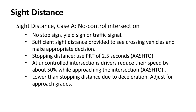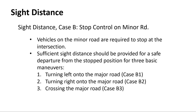Case A — no control — means there are no signs telling people who has the right of way. By federal law, if two cars approach at exactly the same time, the car to your right has the right of way. There are charts and tables to calculate approach and departure triangles for those cases in Case A, so if you ever encounter this situation you'll know where to find it.